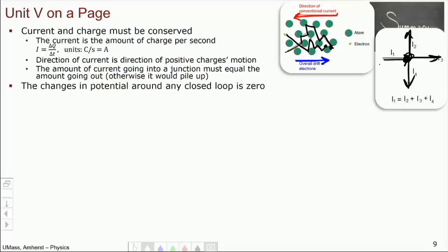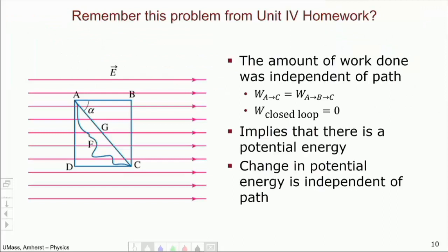Now, second big idea, the change in potential around a closed loop is going to be zero. This is also something already you've seen from Unit 4. Remember this problem from your Unit 4 homework? You saw that the work done going directly from A to C was the same as if I went A to B to C.